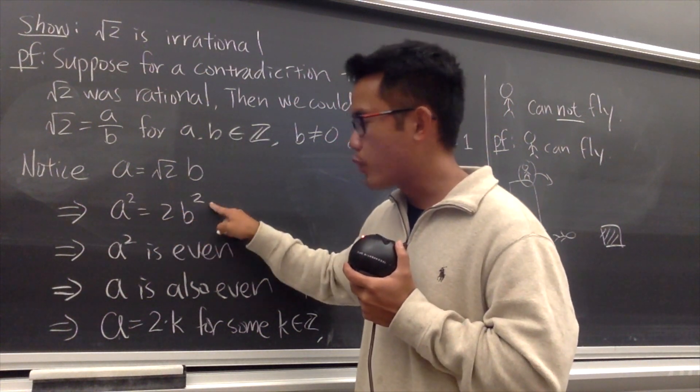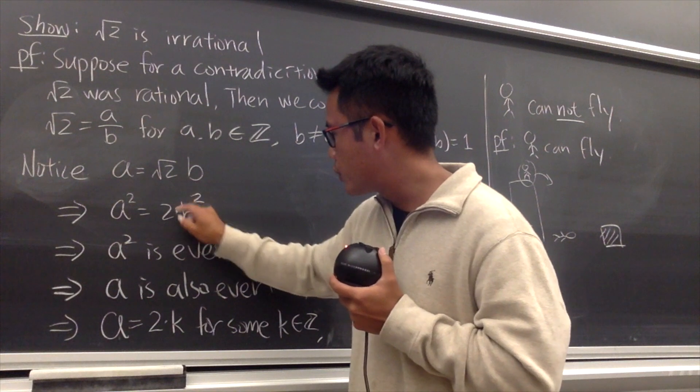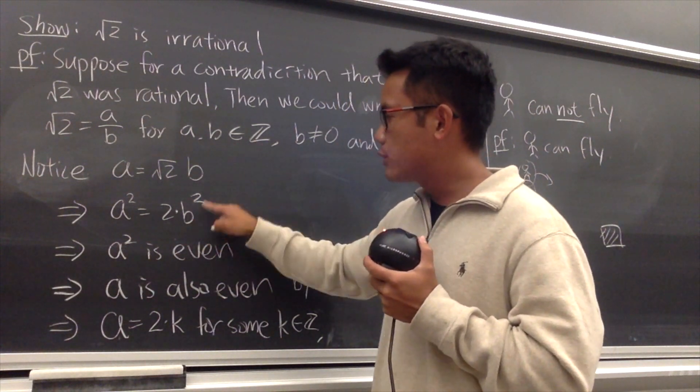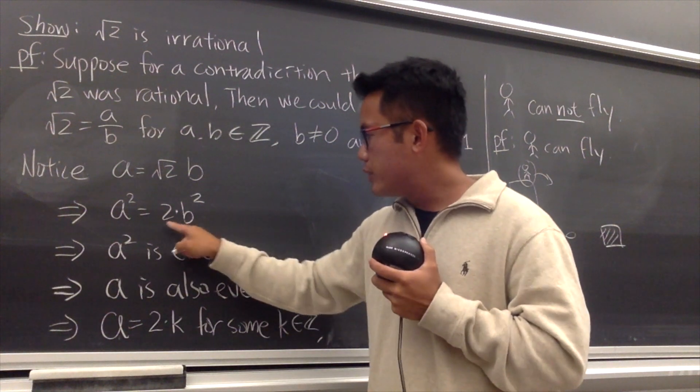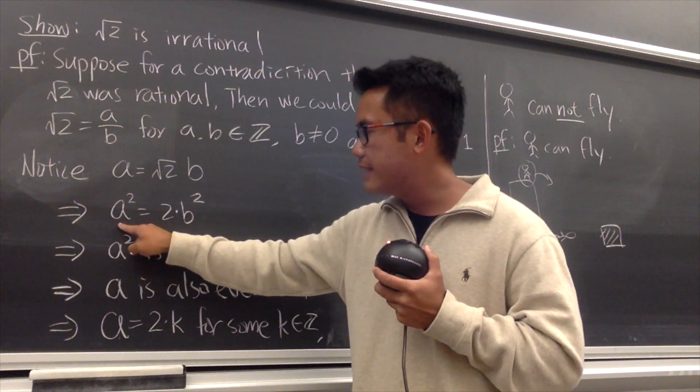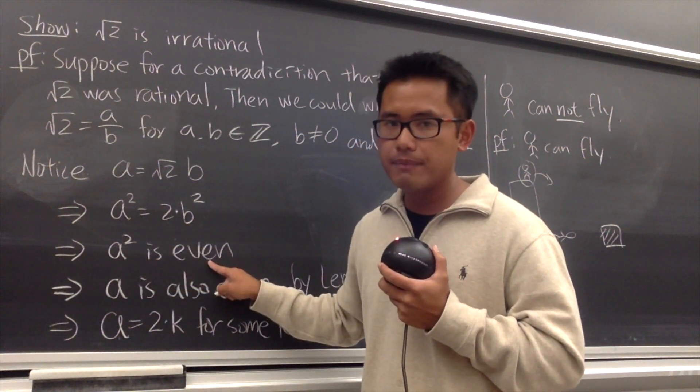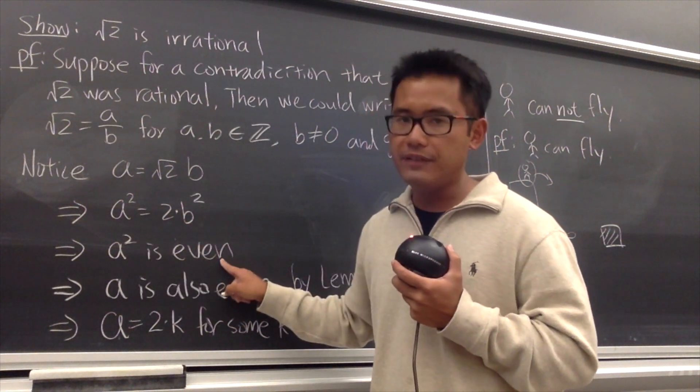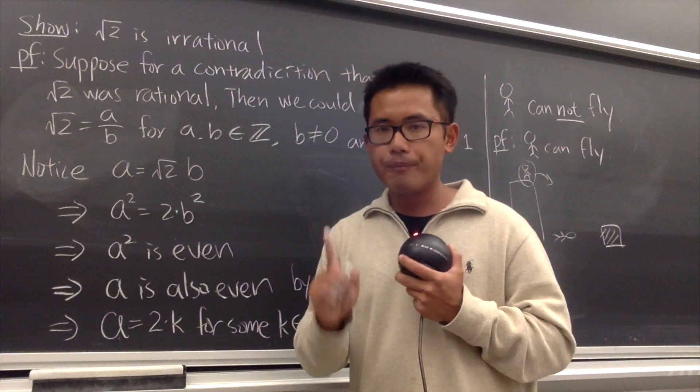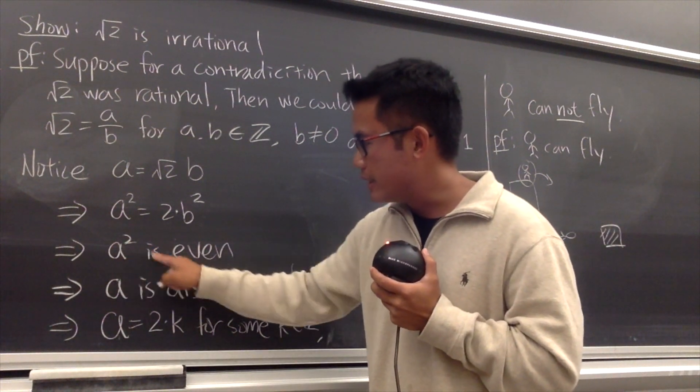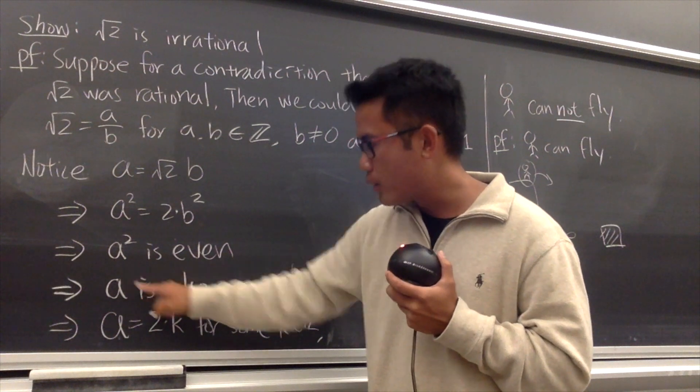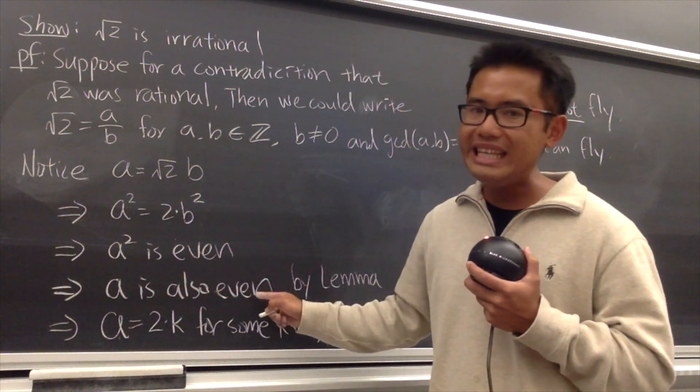And now you see, a squared equals 2 times b squared. Well, this is 2 times b squared. b is an integer, b squared is also an integer. 2 times the integer tells you that a squared is even. a squared equals 2 times something, a squared has to be even. And now here's the deal.